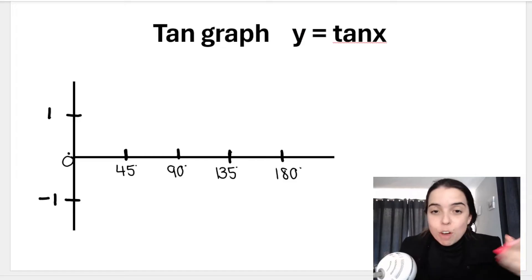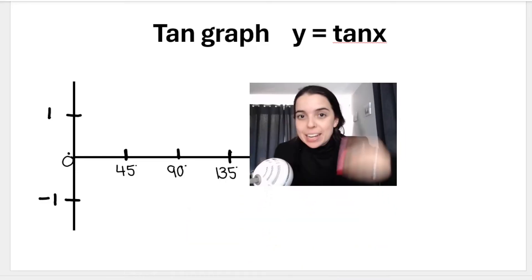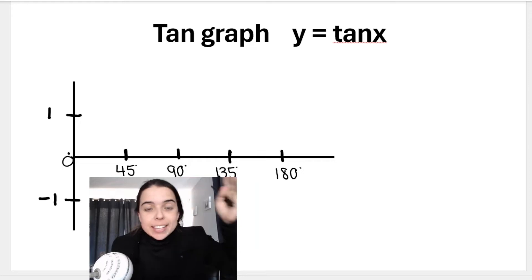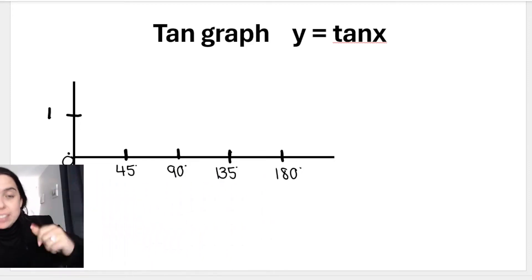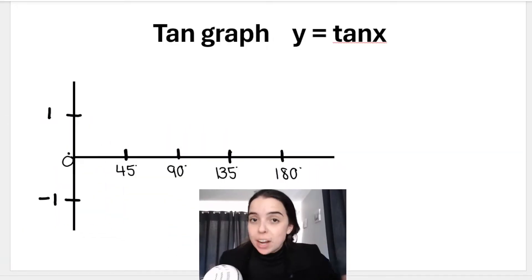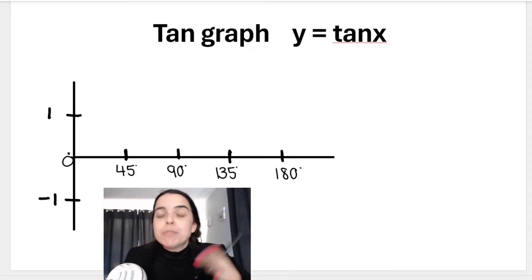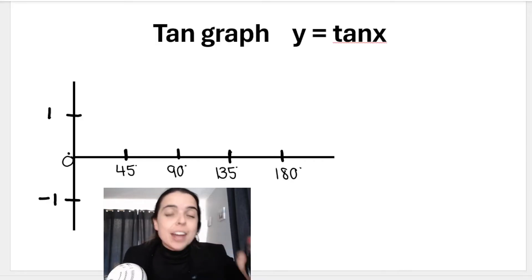Let's plot the tan graph for the following x values, from 0 to 180 — that's my domain. Here is my equation: y is equal to tan x. On the x-axis I have my degrees, starting from 0 in this case. On my y-axis I have my units, going up in units of 1. When I plot, notice what's different to the cos graph and the sin graph: we're going up in steps of 45 degrees, which means we plot every 45 degrees. We're not plotting every 90 degrees like we did with sin and cos.